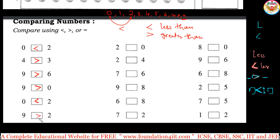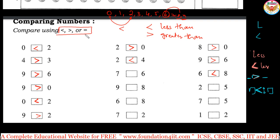Zero and two: zero is here, two is here, so zero is less than two. Nine is greater than two. Two and zero: two is greater. Two comes before four, so two is less than four. If both are same, you can use the equal symbol. Eight is greater than zero. Nine is greater than six. Six is less than eight because six is on the left side and eight is on the right side in the number line. Using these three symbols — less than, greater than, and equal — you can complete the comparing numbers page.